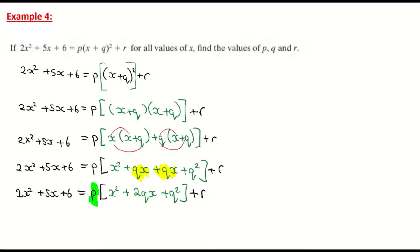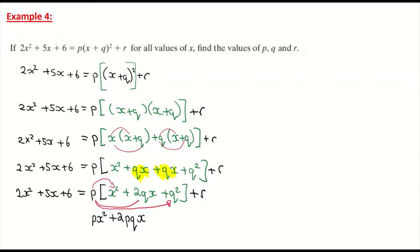Now multiplying in the p outside: p times x² gives px²; p times 2qx gives 2pqx; p times q² gives pq². Don't forget to add r at the end. So the right hand side becomes px² + 2pqx + pq² + r, and that all equals 2x² + 5x + 6.